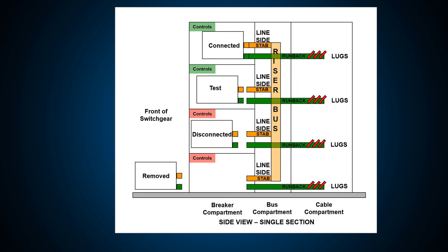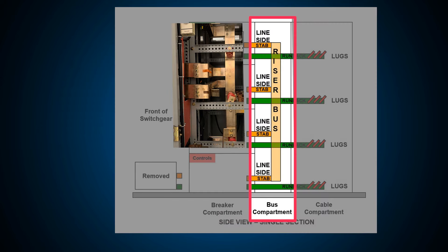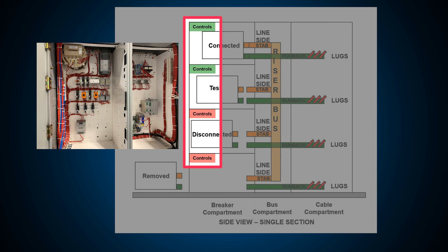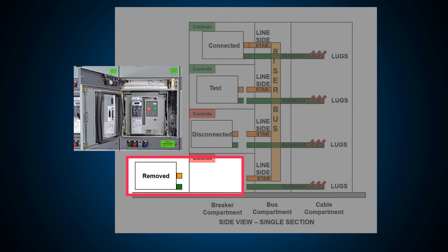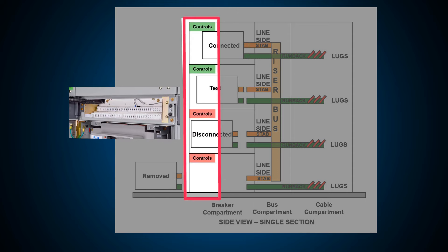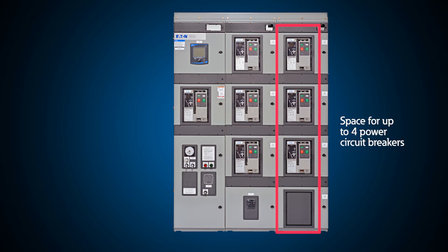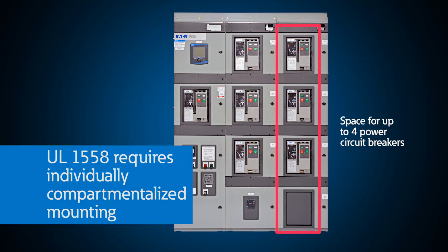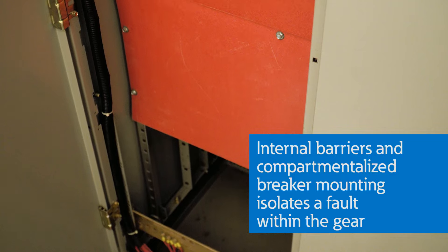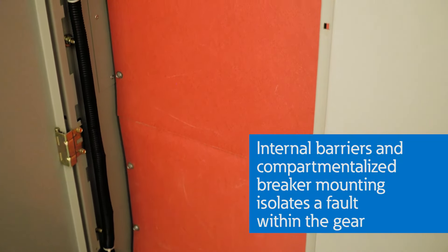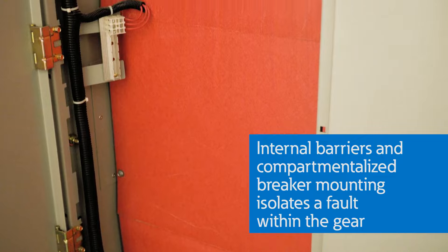Now let's discuss the main parts of low voltage switchgear: breaker compartment or cell, bus compartment, cable compartment, metering control or instrumentation compartment, power circuit breakers, and secondary or control power wiring compartment. Each breaker section can normally hold up to four power circuit breakers arranged in a vertical fashion. UL1558 requires individually compartmentalized mounting — group mounting is not allowed. The advantage of internal barriers and compartmentalized breaker mounting is isolation of a fault within the gear.